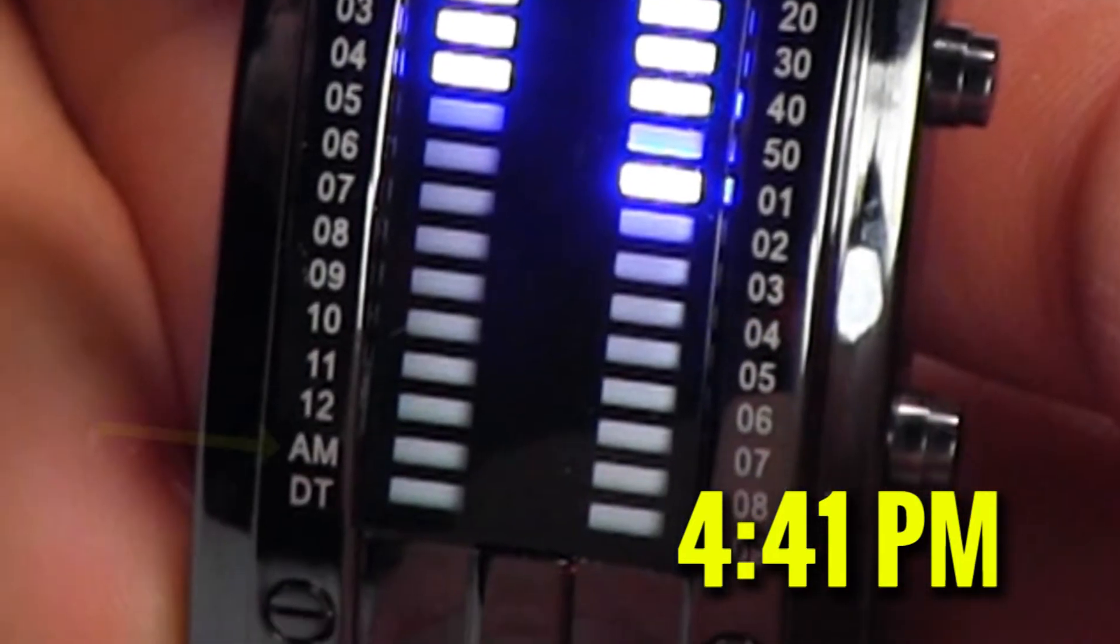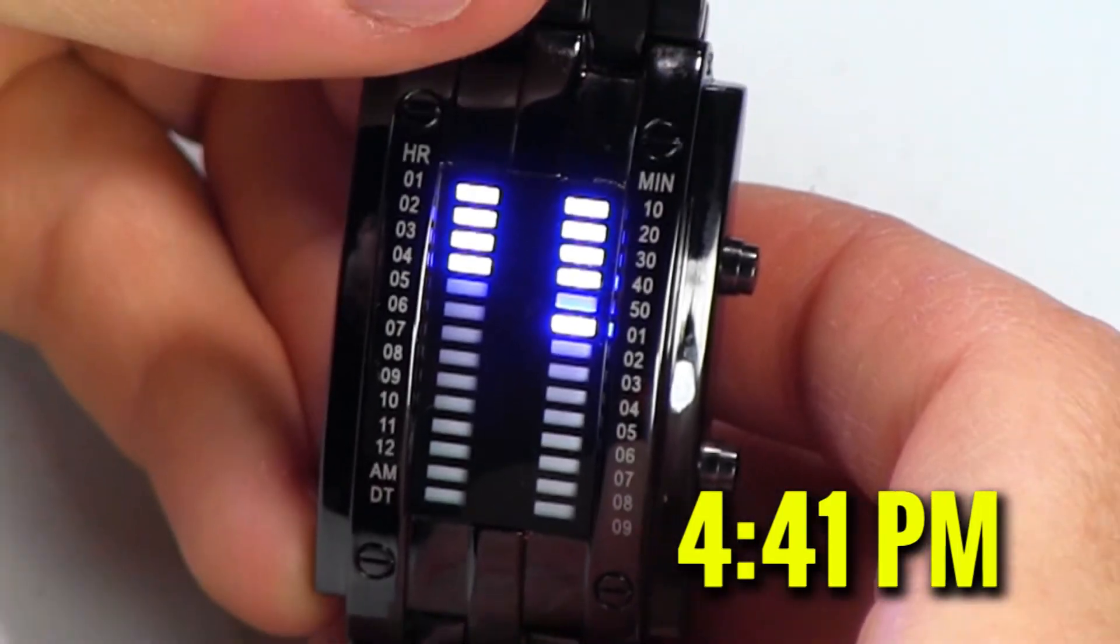In the lower left, there's an AM indicator and that light is not on, which means it's not AM. If that was lit, that would mean that it's 4:42 AM, but because it's not lit, it's PM. That's how you read the time.